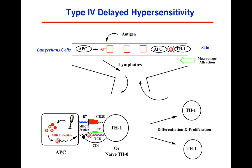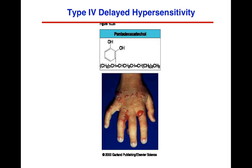The TH1 cells interact with other Langerhans cells in the skin that have also processed the antigen and display it to the TH1 cells. This initiates macrophage attraction through cytokines released by the TH1 cells, which attract macrophages into the skin. That's when you can get a localized anaphylactic response — the itch you get from poison oak or poison ivy. You get an inflammatory response at that contact area.